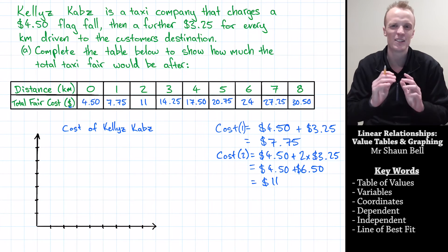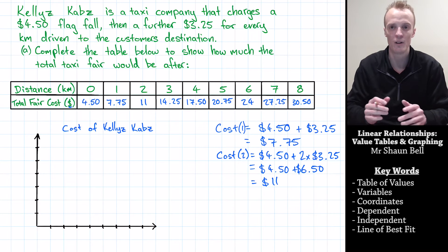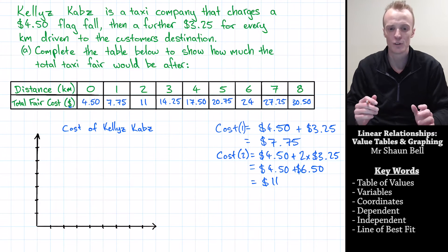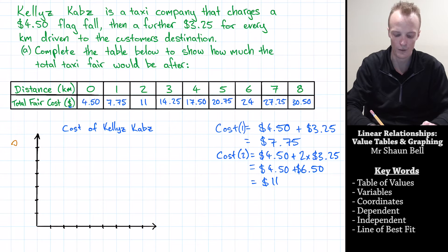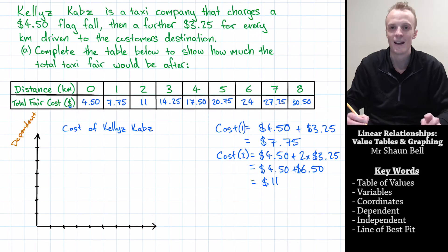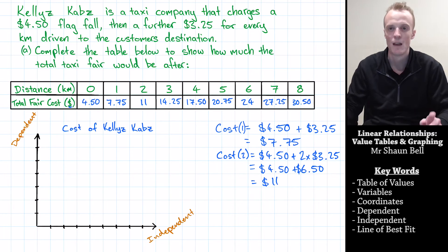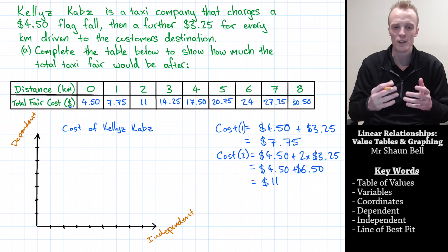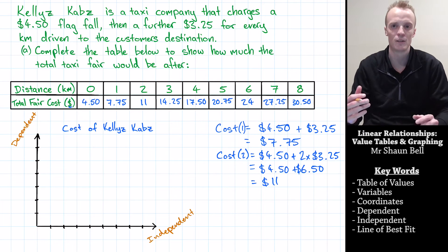Then I need to decide what variable I'm going to put on each axis. Now I've got two variables here. I've got distance and I've got fare cost. Now on my y-axis I should have what's known as the dependent variable. And on my x-axis I should have what's known as the independent variable. But what does any of that mean?